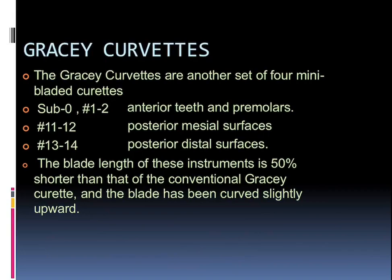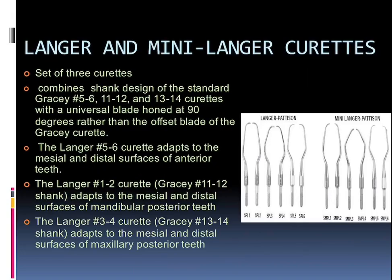Talking about the Langer and mini-Langer curettes: these are a set of three instruments or curettes that combine the shank design of the standard Gracey 5/6, 11/12, and 13/14 curettes with a universal blade honed at about 90 degrees, rather than the offset blade of Gracey curettes at about 60 to 70 degrees. The Langer 5/6 curette adapts to the mesial and distal surface of the anterior teeth. The Langer 1/2 curette adapts to the mesial and distal surface of the mandibular posterior teeth, whereas the Langer 3/4 curette adapts to the mesial and distal surface of the maxillary posterior teeth.